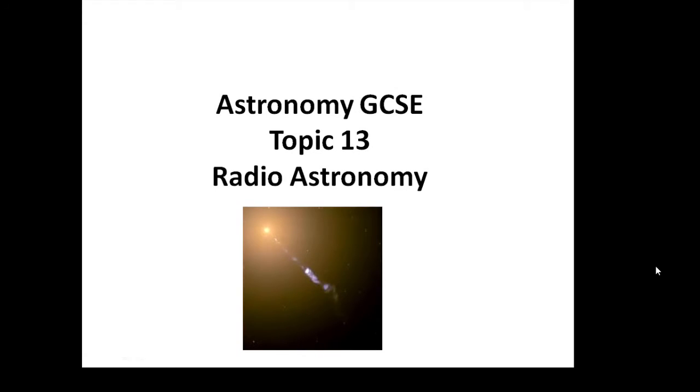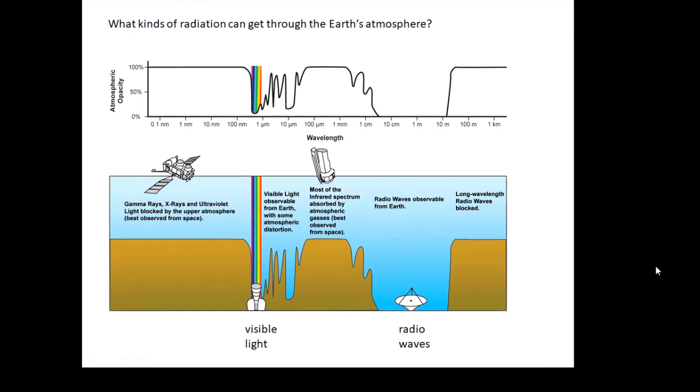Astronomy GCSE topic 13: radio astronomy. What do we need to know about radio astronomy? Now this is an important graph from NASA and it basically tells us what different kinds of radiation can get through the Earth's atmosphere and what can't. Important for you to remember what can get through: well, visible light can get through and radio waves can get through.